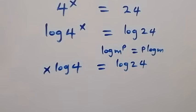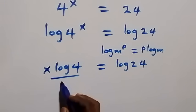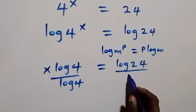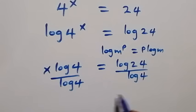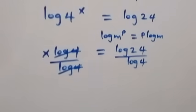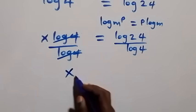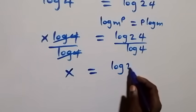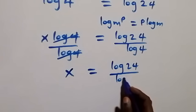Our next step is to divide both sides by log 4. Dividing this side by log 4 and also this side by log 4, log 4 cancels and we are left with x equals log 24 over log 4.